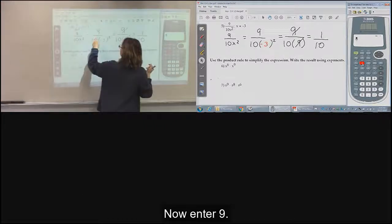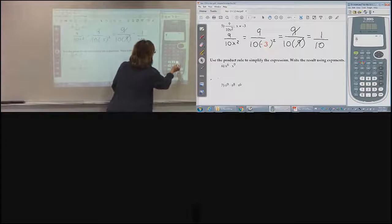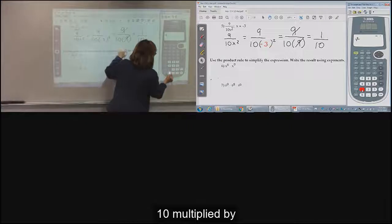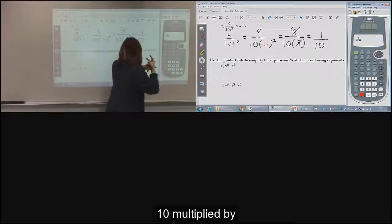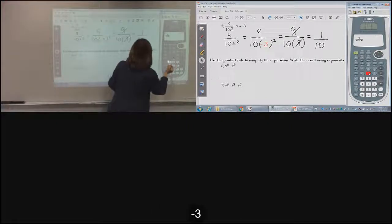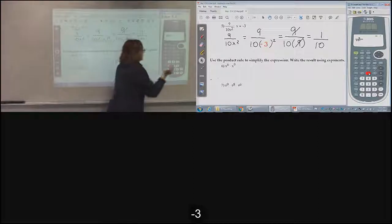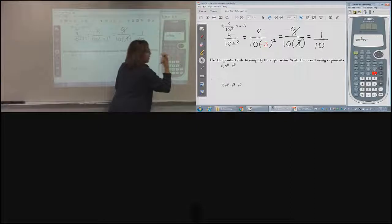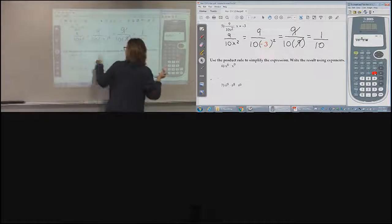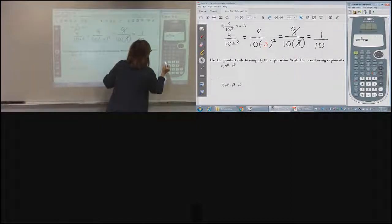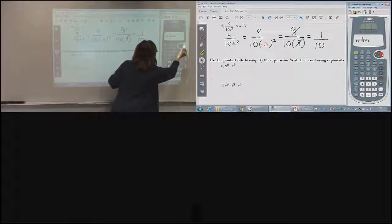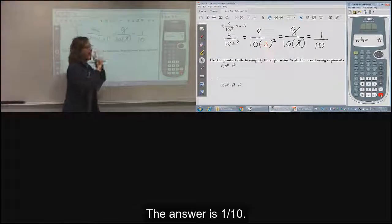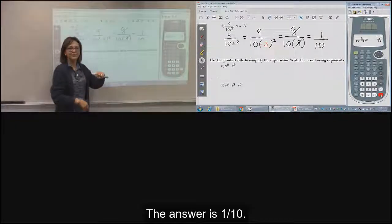So we'll enter 9, and then go down. And enter 10 times negative 3, and then squared. The answer is 1 tenth. And that's it.